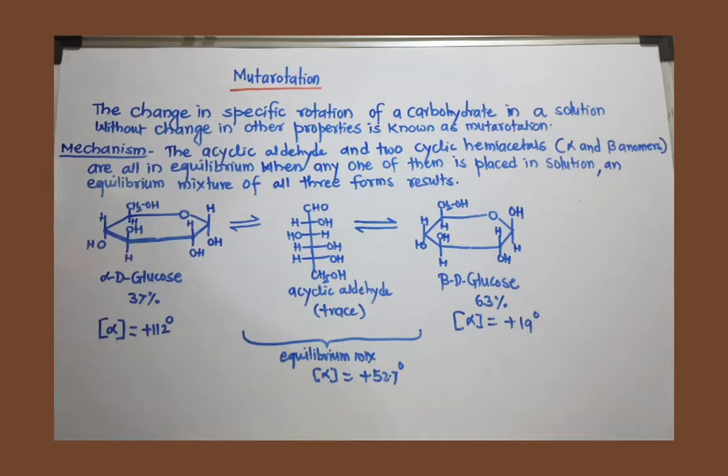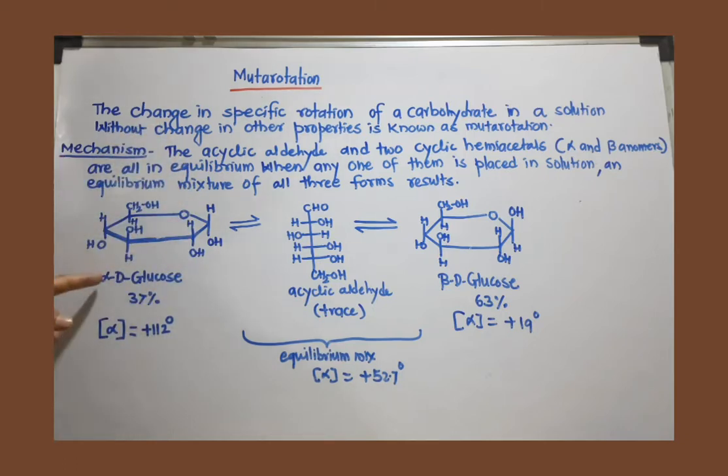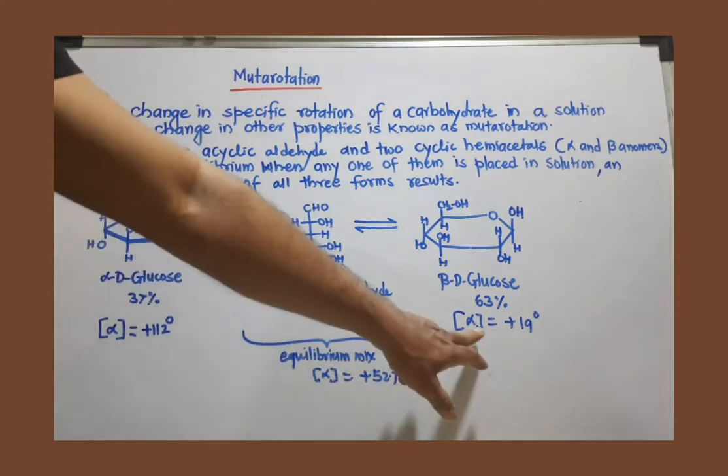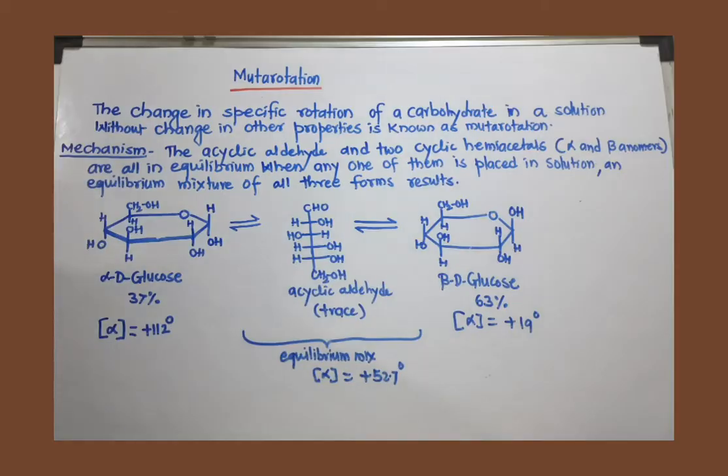We can isolate these, and if you measure the specific rotation of alpha-D-glucose, you observe that it can rotate the plane of plane-polarized light through a certain angle, which is +112 degrees. This is the specific rotation. The specific rotation of beta-D-glucose after isolation is +19 degrees.